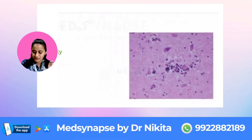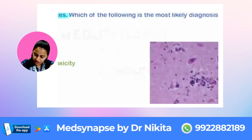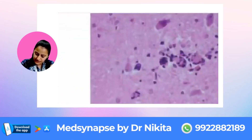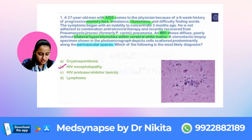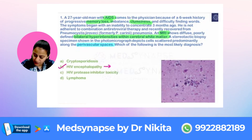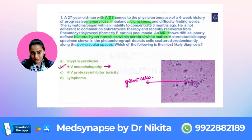What are you seeing in the image here? Basically, the image is showing multinucleate giant cells, which is a finding seen in HIV encephalopathy. So remember, what the image is showing is the multinucleate giant cells in HIV encephalopathy.